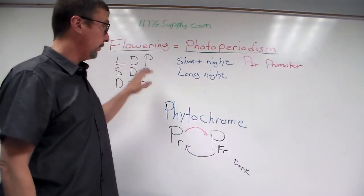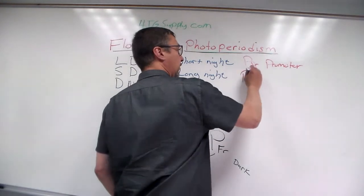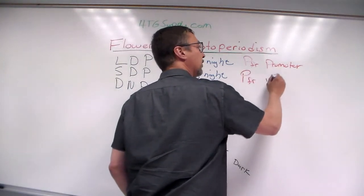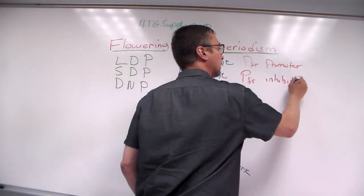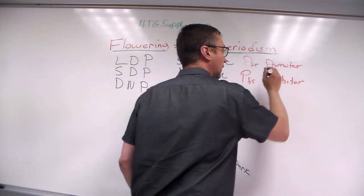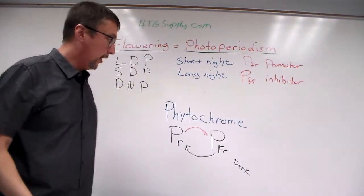Now it's the opposite in short day plants. Here, phytochrome far red is an inhibitor. So it inhibits or prevents flowering.